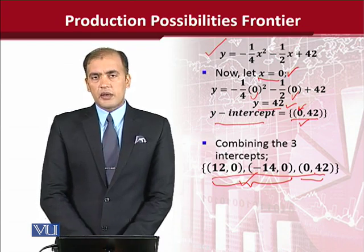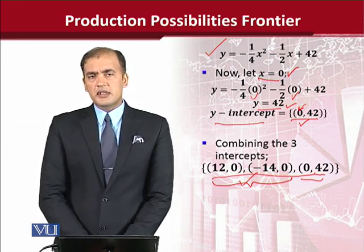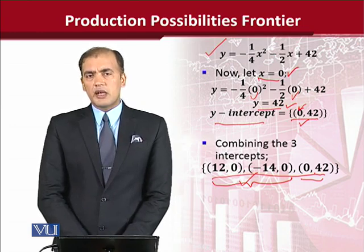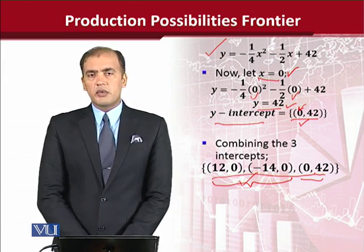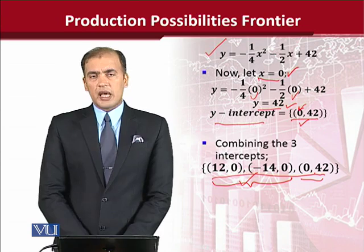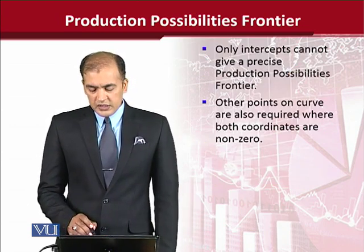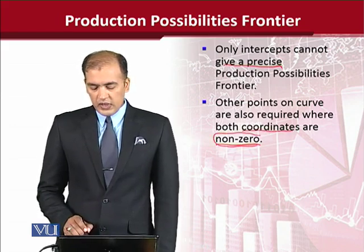There is a caveat here. On the Cartesian coordinates we have the x-axis and y-axis, and we can locate points on them using intercepts, but what about points that exist within the quadrants — not on the axes but in the x-y space between them? For those, we should use non-zero values of x and y. If we do that, we get further points located in the quadrants, not just on the axes. A complete curve cannot be achieved using only the intercepts; we must get other points using non-zero values of the variables.